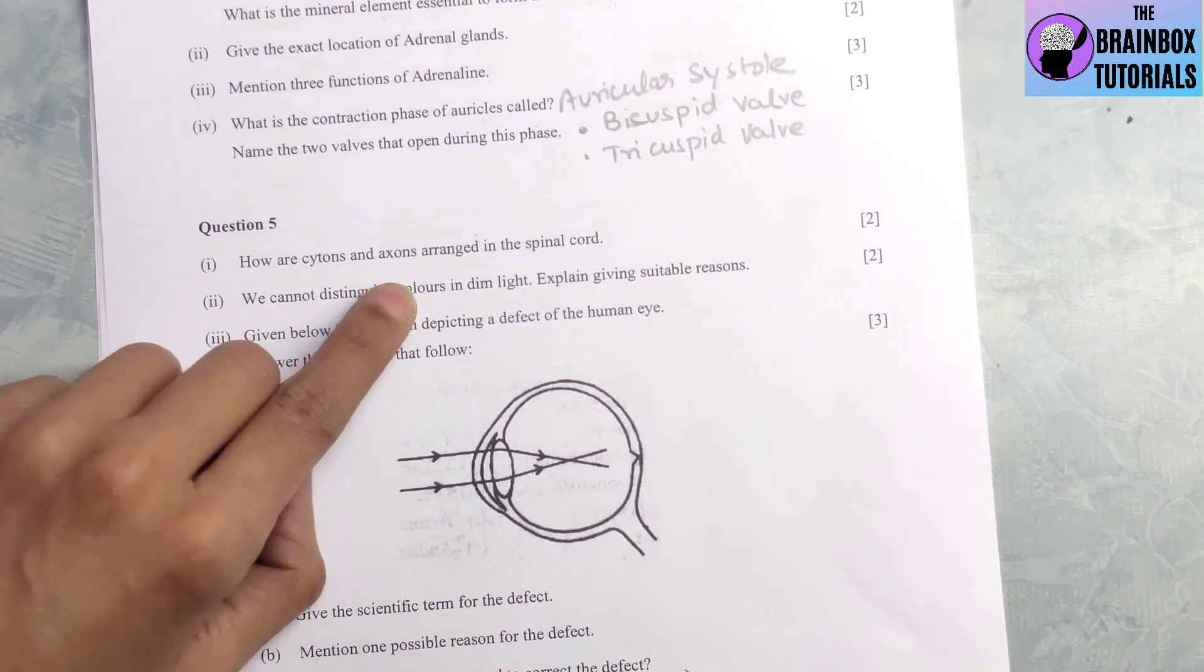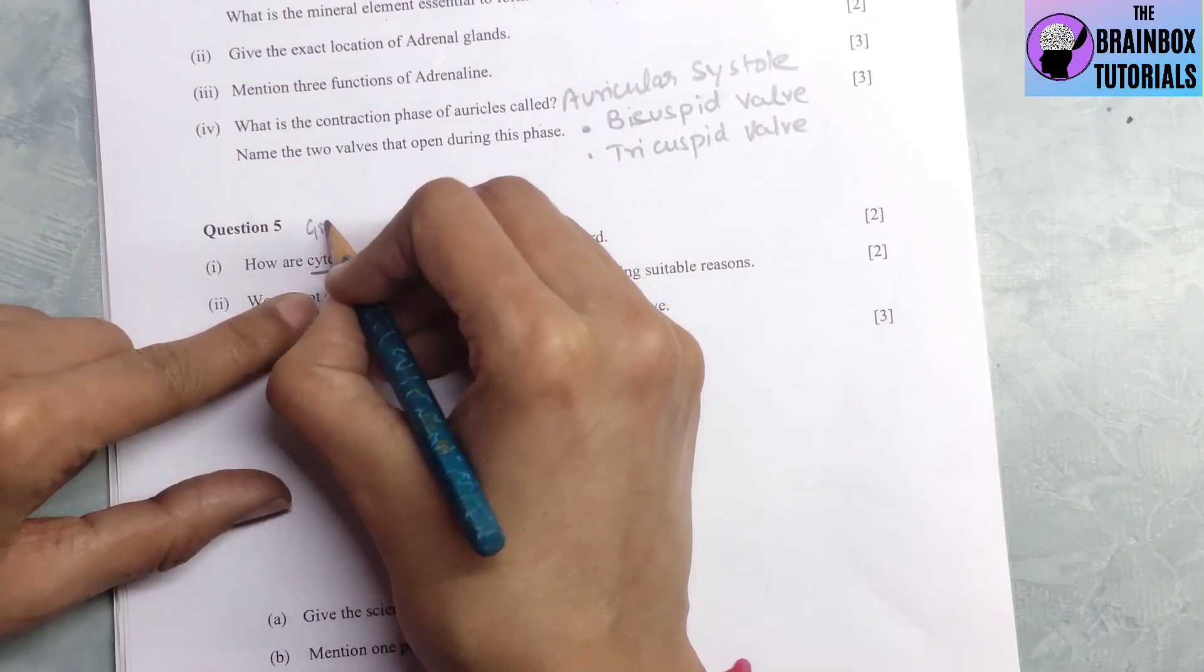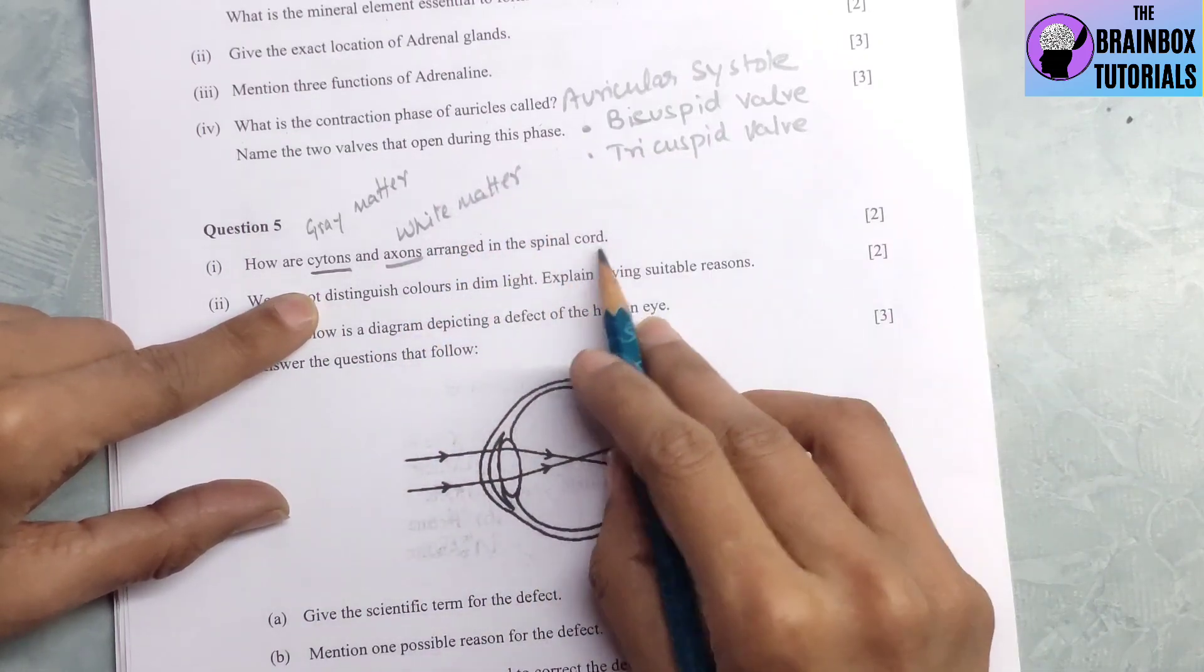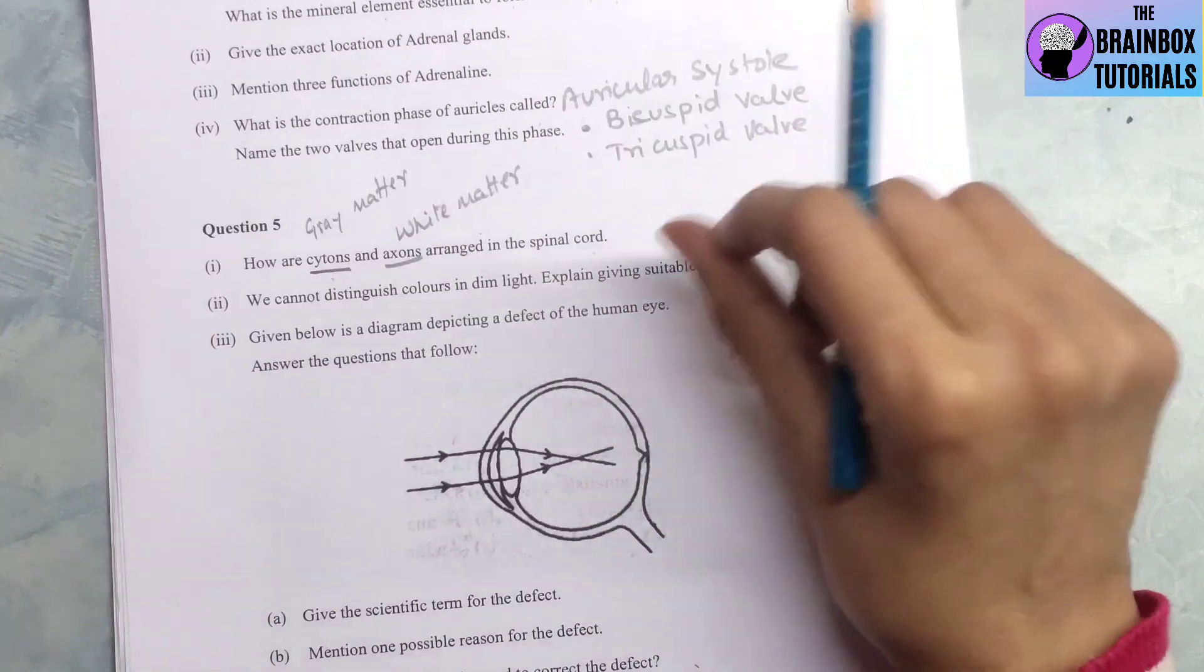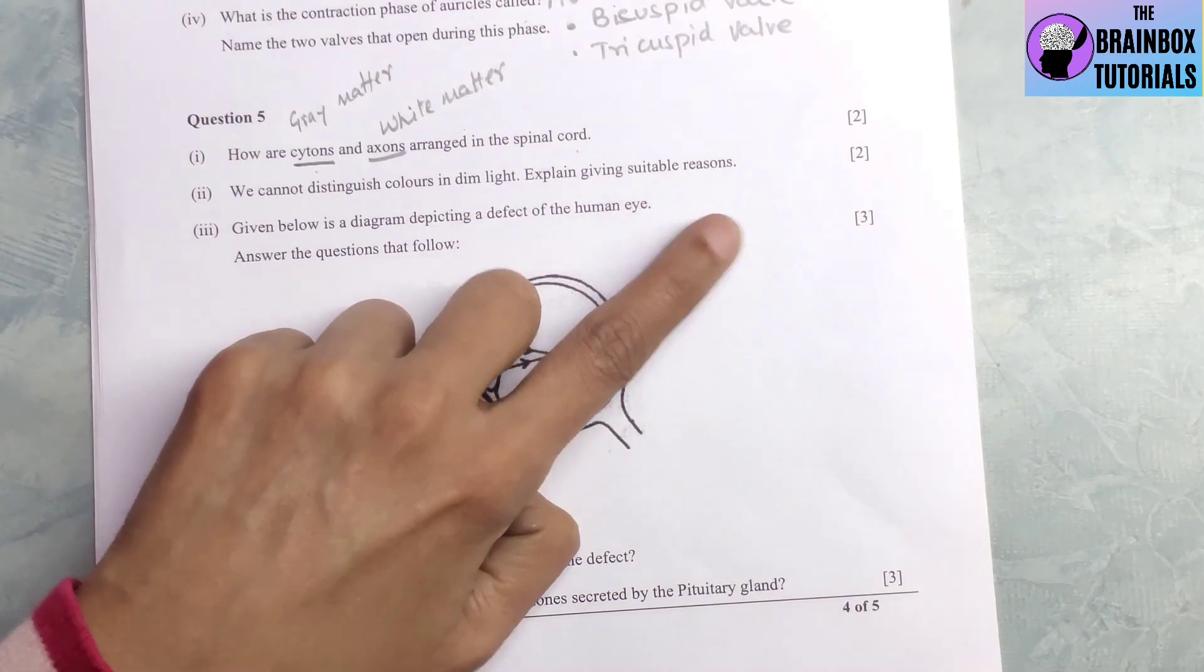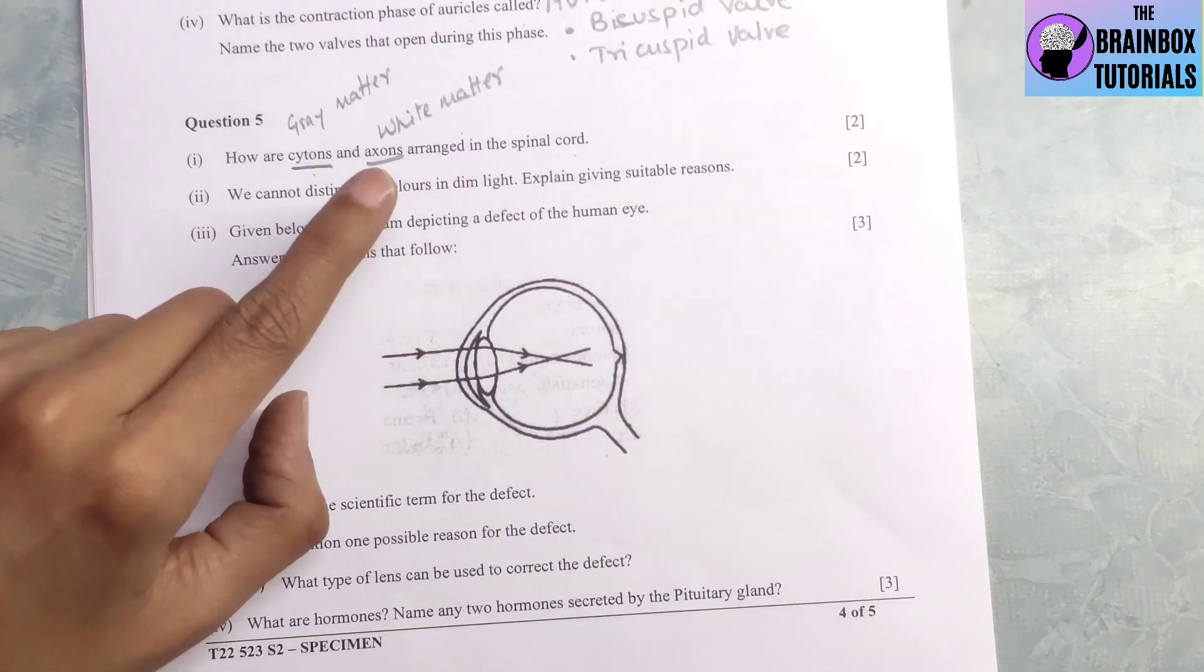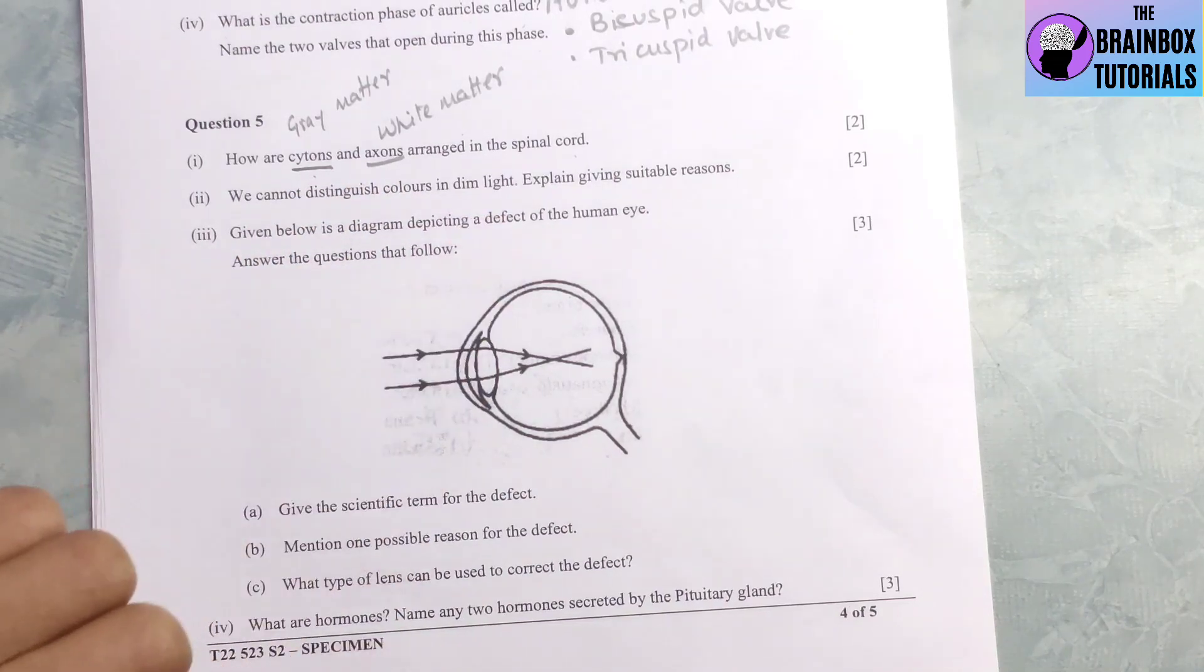Question number 5, how are cytons and axons arranged in the spinal cord? Cytons are in the grey matter and axons are arranged in the white matter in the spinal cord. That means cytons are inside and axons are outside. Question number 2, we cannot distinguish colors in dim light, explain giving suitable reason. See, color vision or ability to distinguish colors is a characteristic of cone cells, and cone cells are stimulated in bright light. That is why we cannot distinguish colors in dim light.